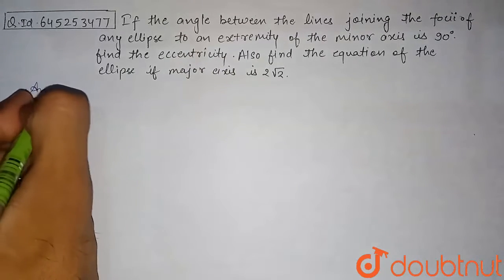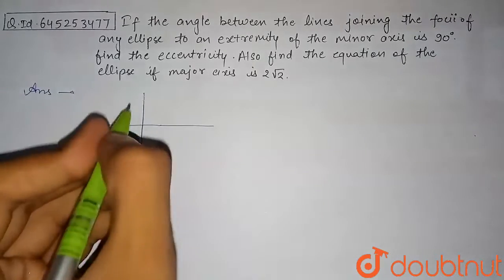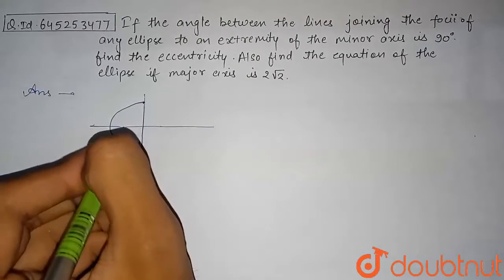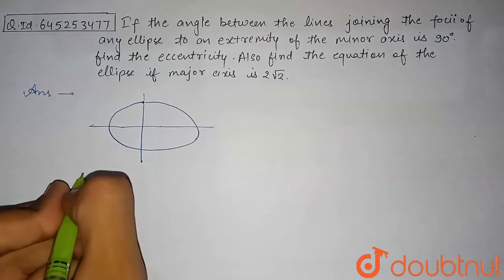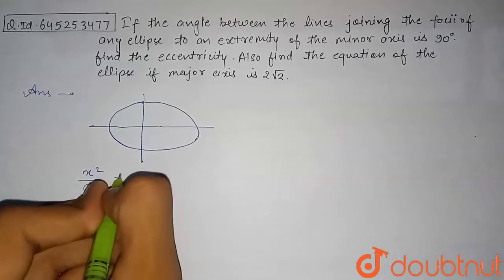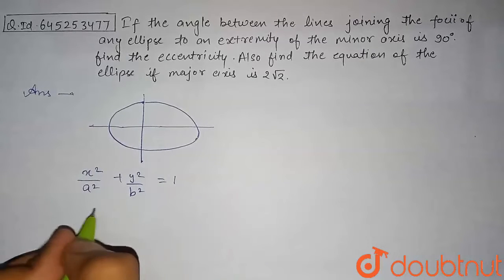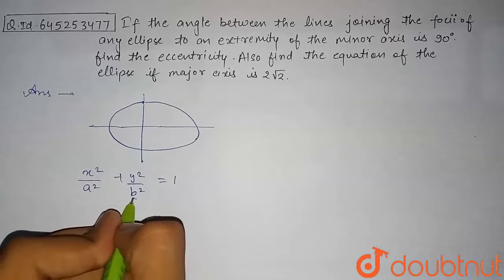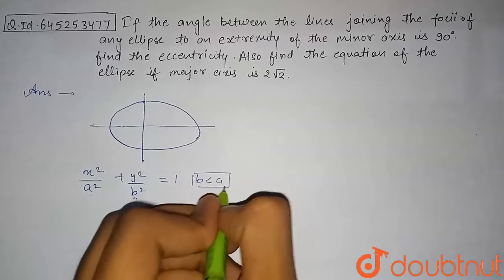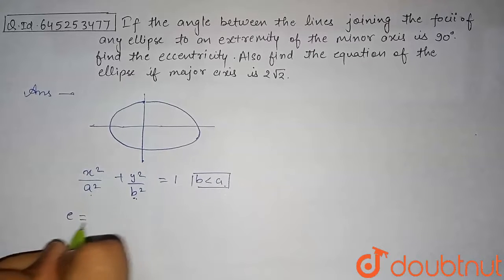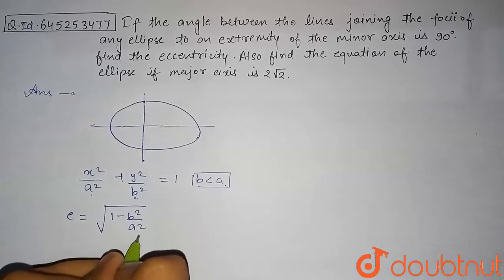Let's begin with the solution. If we draw a rough sketch of the ellipse, with the y-axis and x-axis, we assume the ellipse equation to be x²/a² + y²/b² = 1. For this ellipse, if b is smaller than a, we can say that the eccentricity e = √(1 - b²/a²).